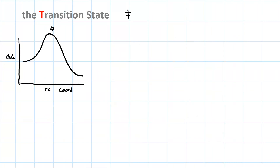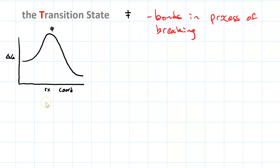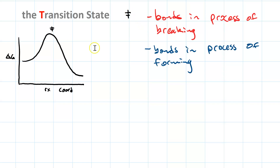The transition state, symbolized by double-dagger, is what you see at the hump of each step in a reaction. It's sort of midway between reactants and products. In a chemical reaction, bonds on the reactant side will break; in the transition state, those bonds are in the process of breaking. Chemical reactions also involve bond forming, so bonds on the product side are in the process of forming in the transition state. You can think of it as approximately midway between reactants and products.